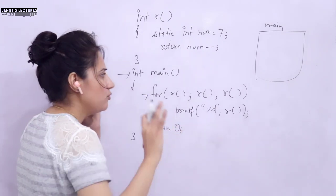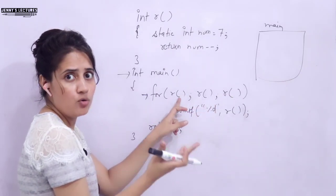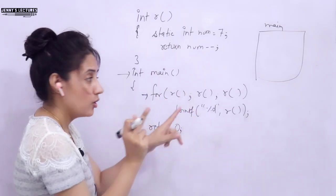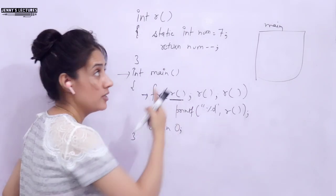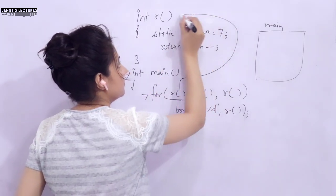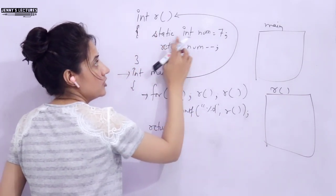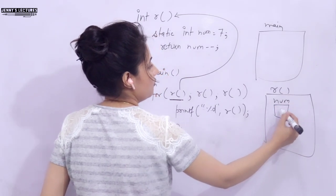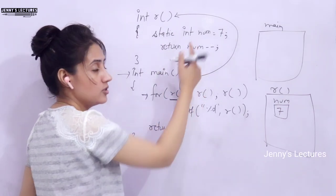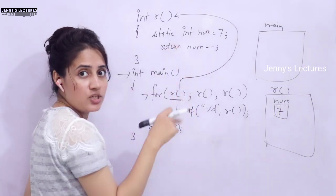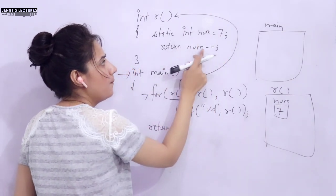Just follow the steps — you know what a function call means. Whenever this function is called, the compiler sees the function call and control goes to the definition of function r. In r, we have a static int variable num initialized to 7. Static means the lifetime of this variable is throughout the program; it holds its previous value and is initialized only once, not re-initialized again and again.